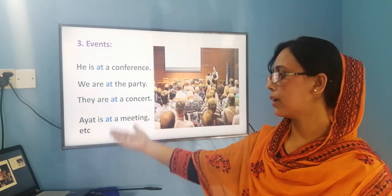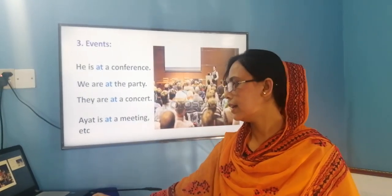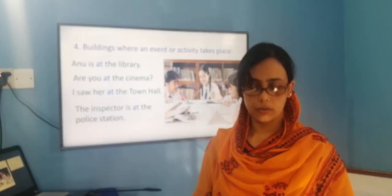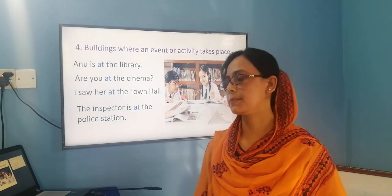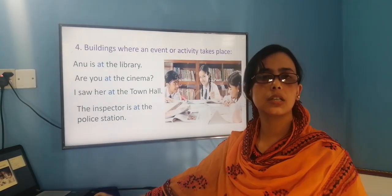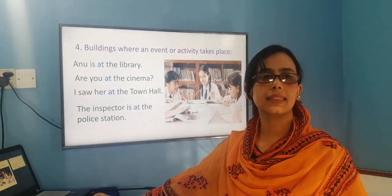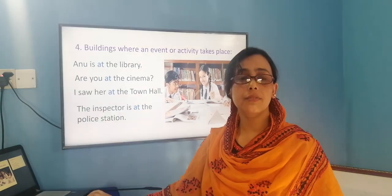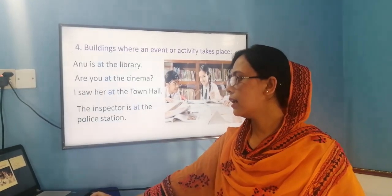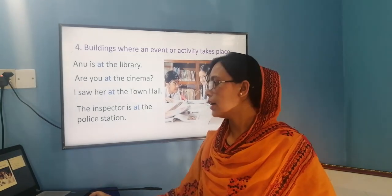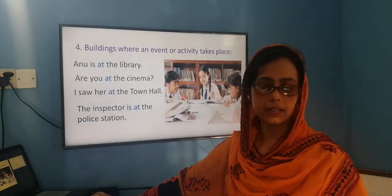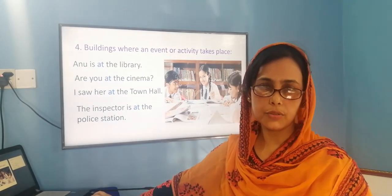We also use 'at' when talking about a building where an event or activity takes place. For example, 'Anu is at the library' — she is there for some activity or work. Similarly: 'he arrived at the cinema,' 'I saw her at town hall,' 'the inspector is at the police station.' These are all buildings where events or activities take place, so we use the preposition 'at.'